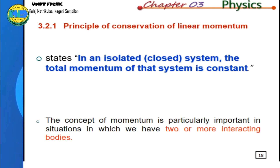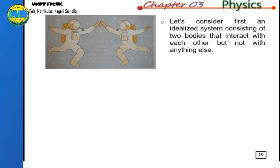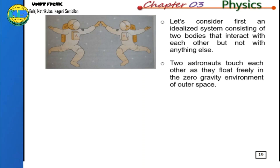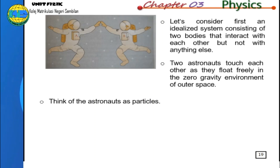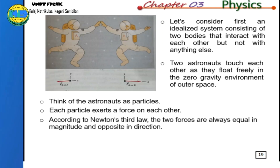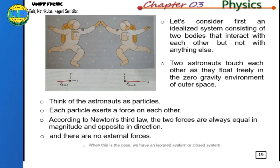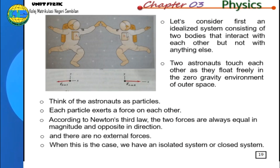The concept of momentum is particularly important in situations involving two or more interacting bodies. Consider an idealized system of two bodies that interact with each other but not with anything else — for example, two astronauts touching each other as they float freely in the zero-gravity environment of outer space. Each particle exerts a force on the other. According to Newton's third law, these two forces are always equal in magnitude and opposite in direction, and there are no external forces. This is what we call an isolated or closed system.